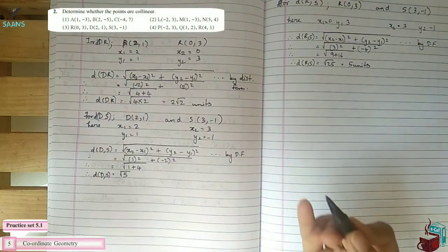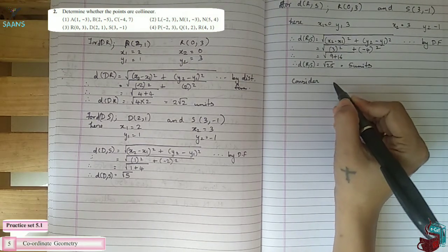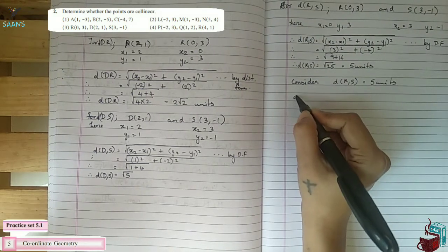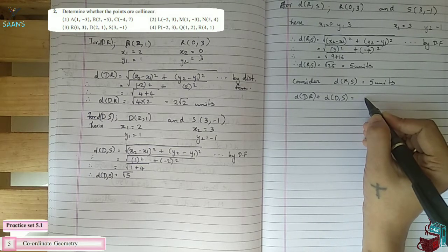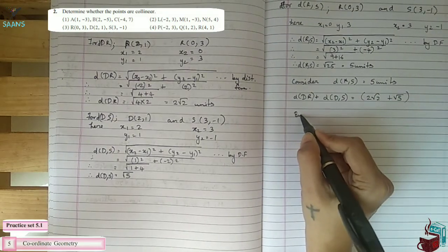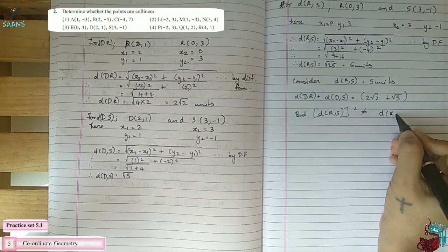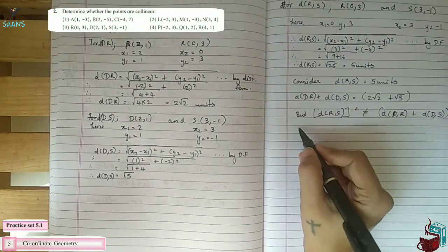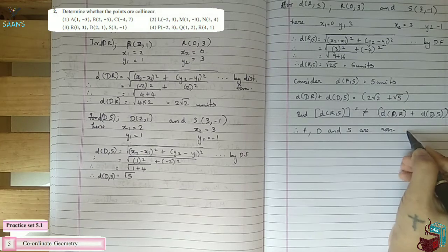RS is the greatest distance at 5 units. Since RS² does not equal (DR + DS)², i.e., (2√2 + √5)², points R, D, and S are non-collinear.